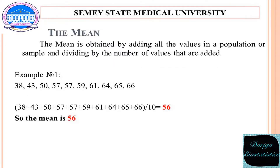The first measure is the mean. An example is given. The mean is obtained by adding all the values in a population or a sample and dividing by the number of values that are added.